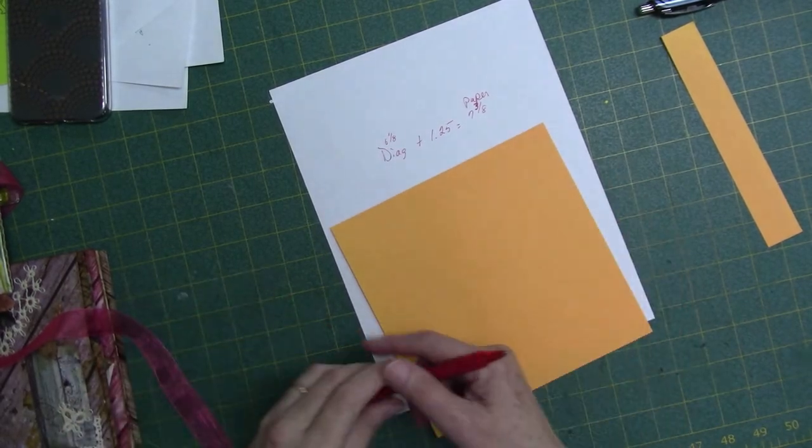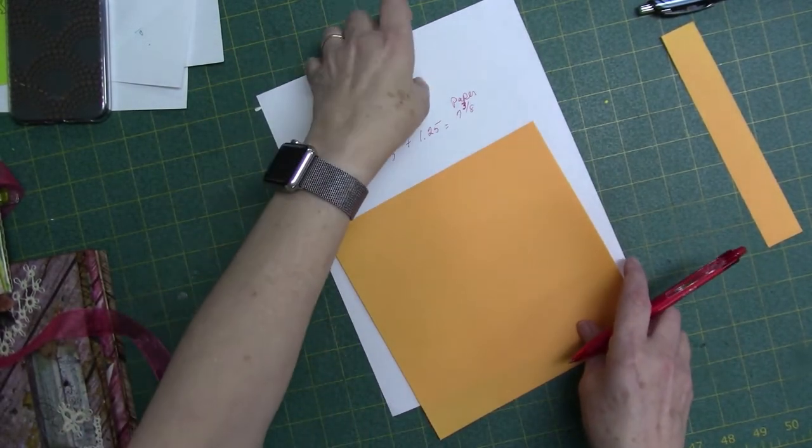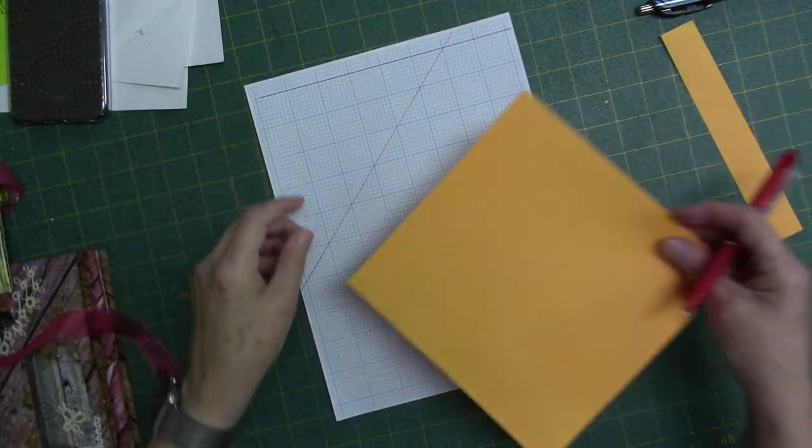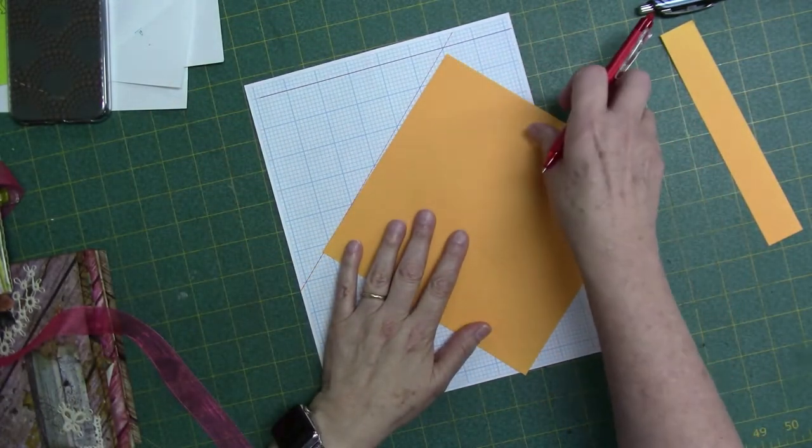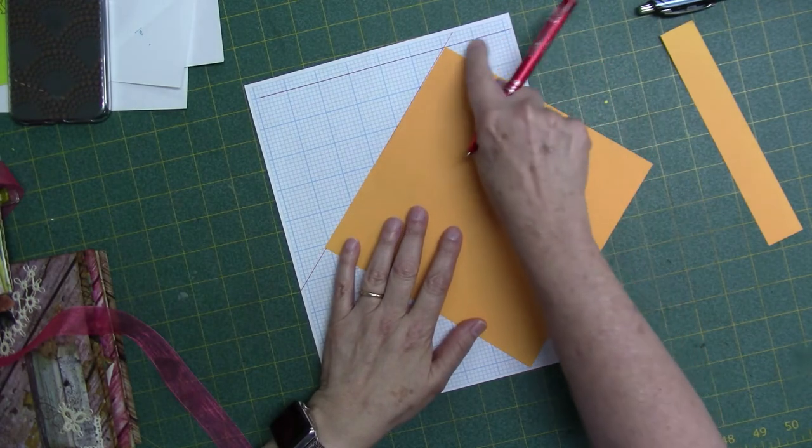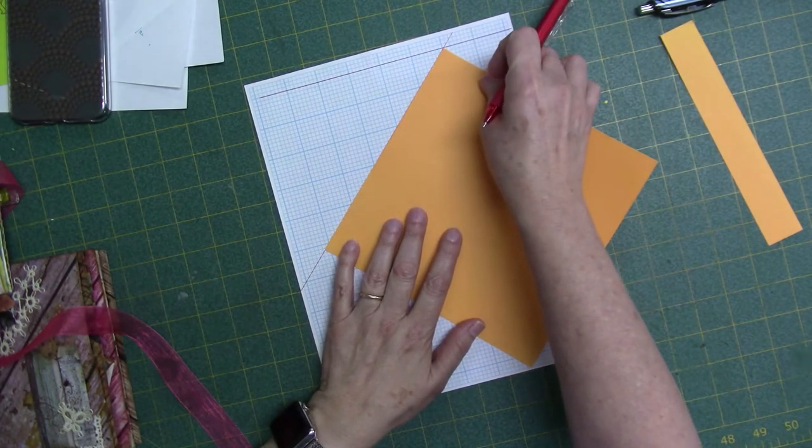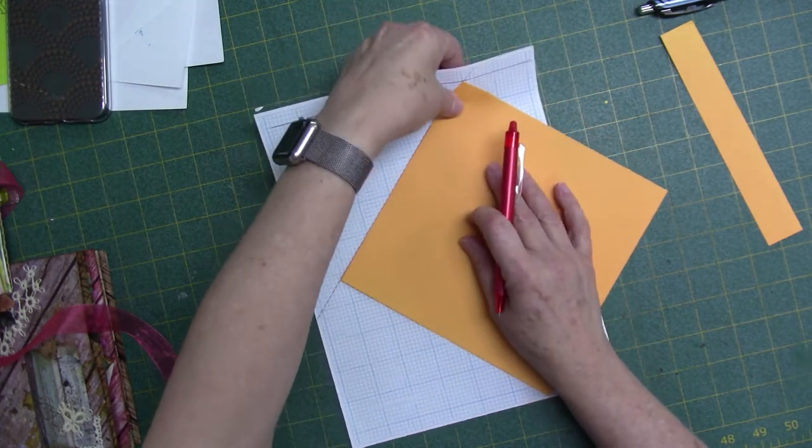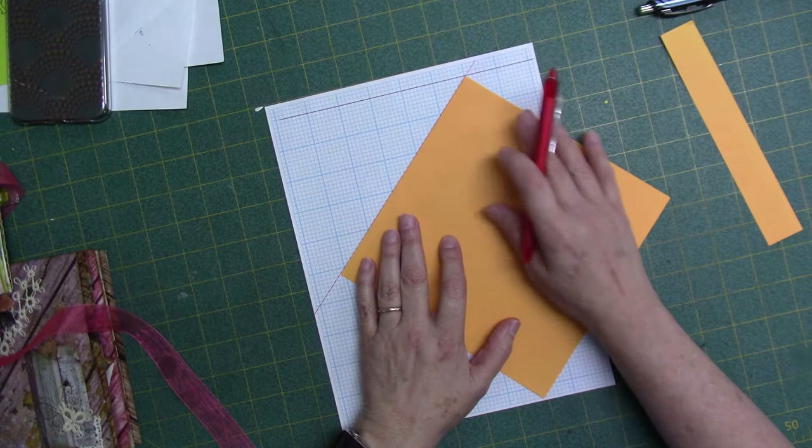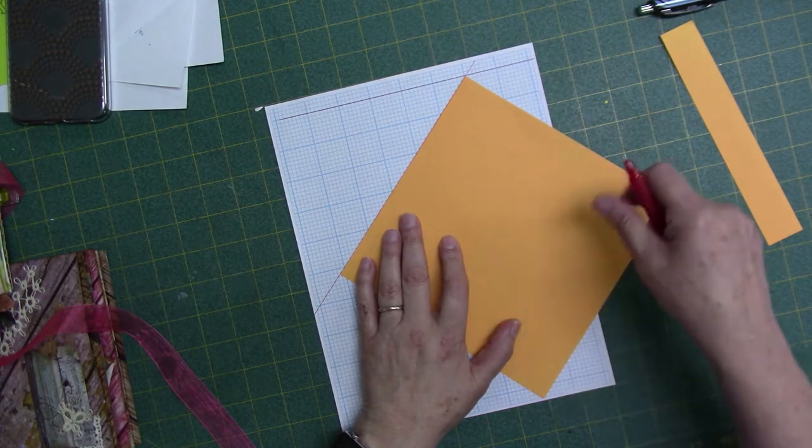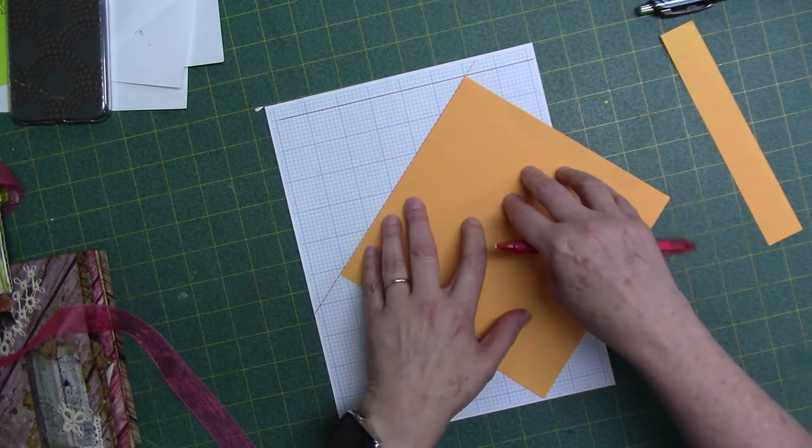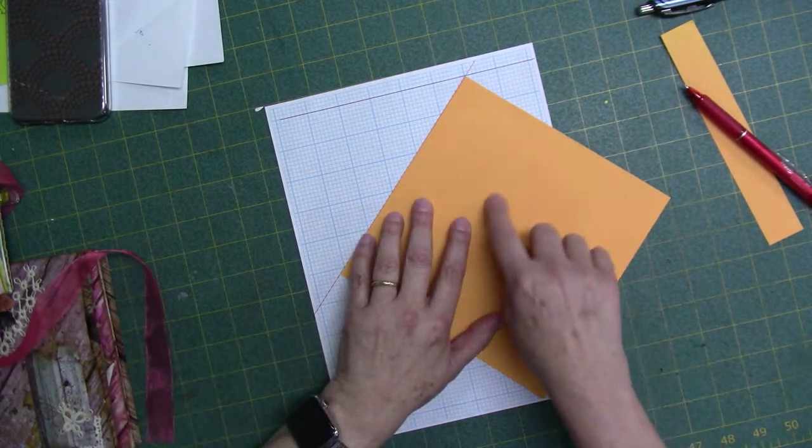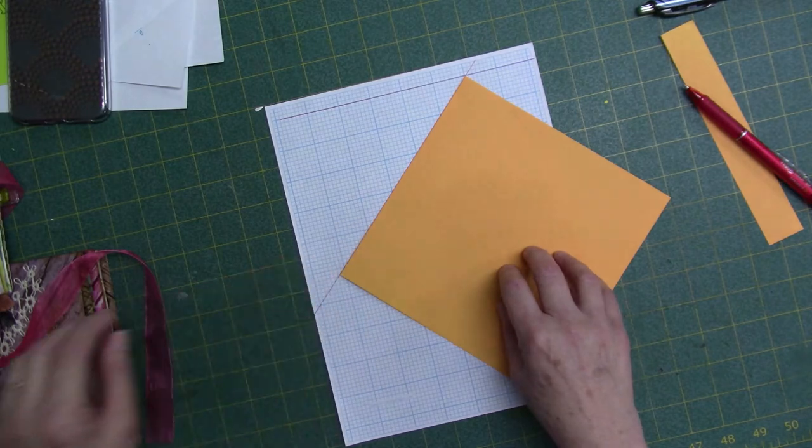All right, so I've got my paper cut, and so now here is where the graph paper comes in handy. So I'm just going to line up the top of my paper with my guideline that I drew across the top. And if you do this on a light box, you can really see the grid lines, and when I practiced this I used white paper and I could see the grid lines. I'm going to be able to see them, but it's probably not going to show up on the camera. But you can kind of see them through there.